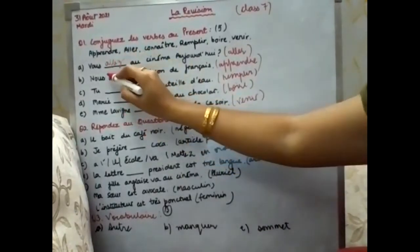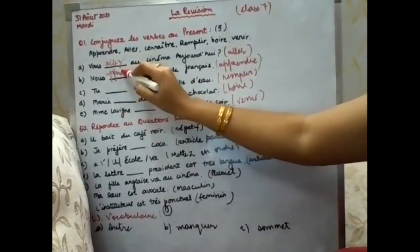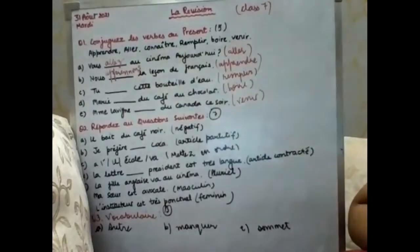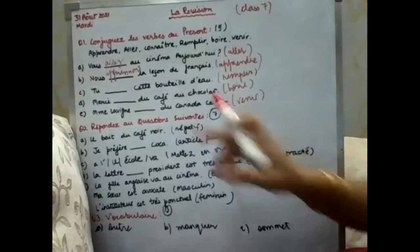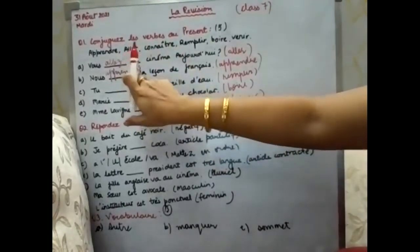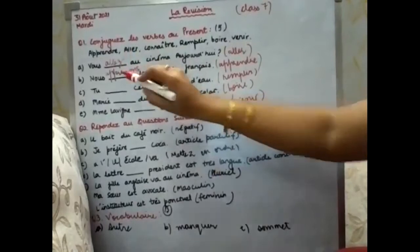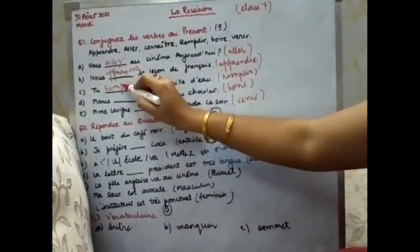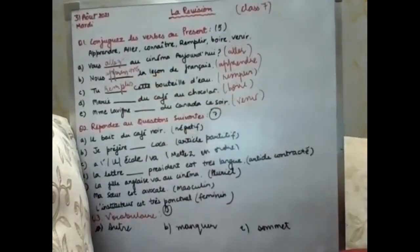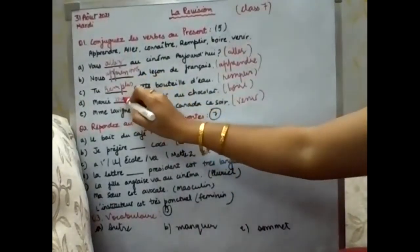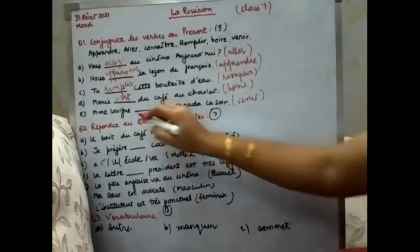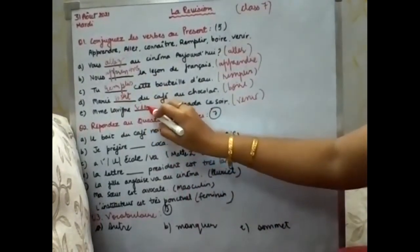The answers: 'nous apprenons' — a double p, r, e, double n, o, n, s — apprenons. Next, 'remplir': tu remplis. Next, 'Marie boit' — b, o, i, t. Last, 'Mademoiselle Levine vient' — v, i, e, n, t.